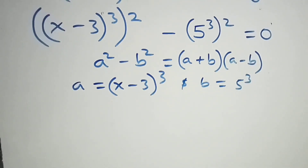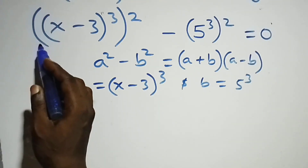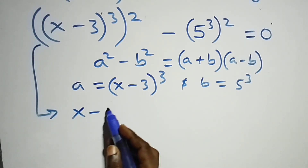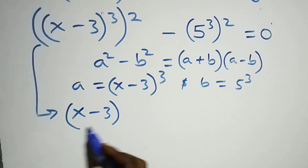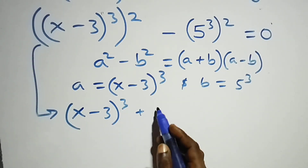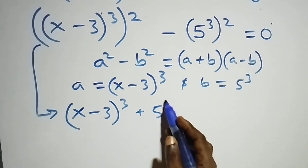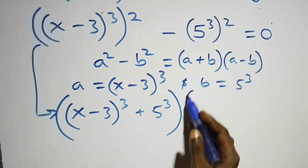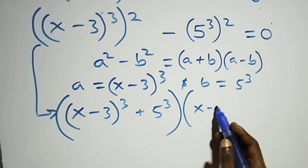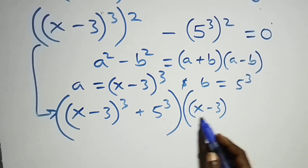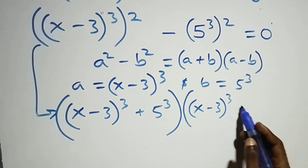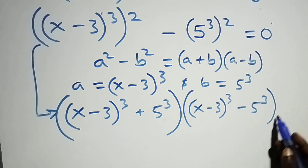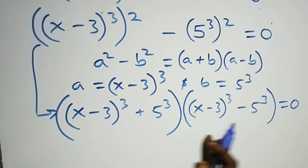That is, this becomes: (x minus 3) times 4 raised to power 3, plus 5 raised to power 3, into brackets, times (x minus 3) times 4 raised to power 3, minus 5 raised to power 3, close brackets, equals to zero.